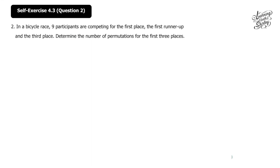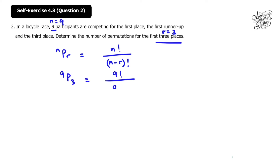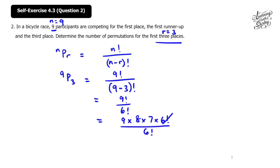Let's look at question 2. In a bicycle race, 9 participants are competing for first place, the first runner-up, and third place. Determine the number of permutations for the first 3 places. Here n equals 9 and r equals 3. Using nPr: 9P3 equals 9 factorial over (9 minus 3) factorial, equals 9 factorial over 6 factorial, equals 9 times 8 times 7 times 6 factorial. We cancel the 6 factorial top and bottom. The answer is 9 times 8 times 7 equals 504.